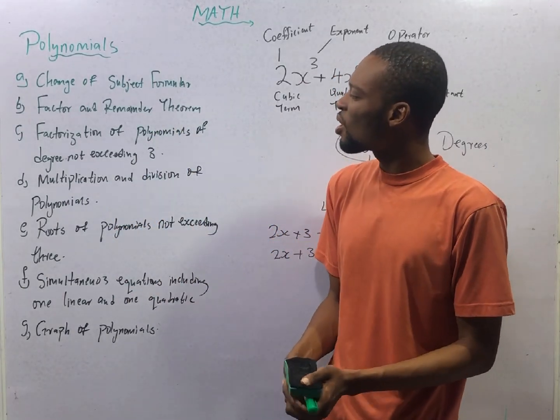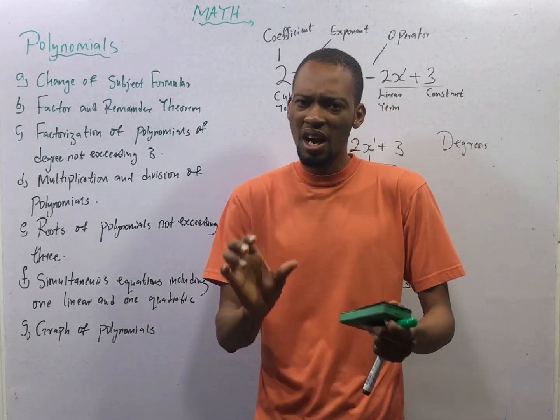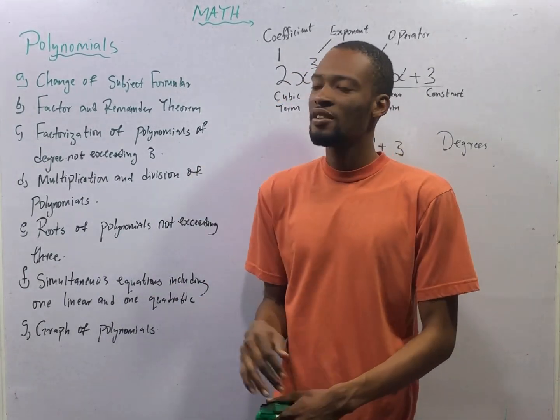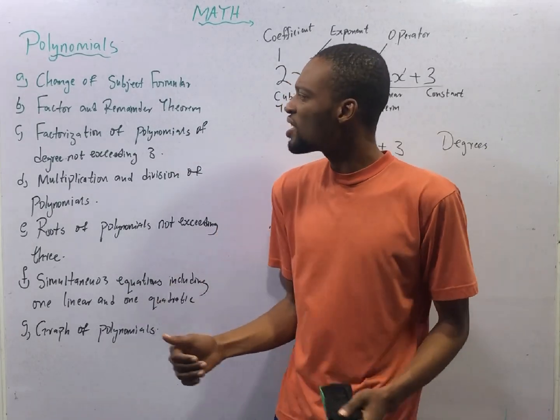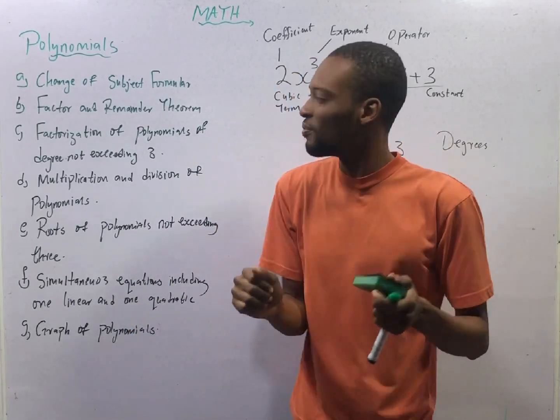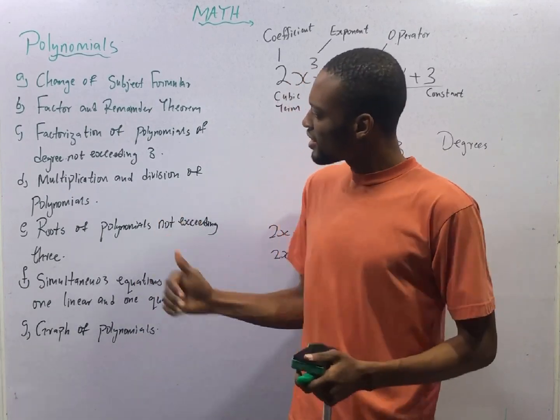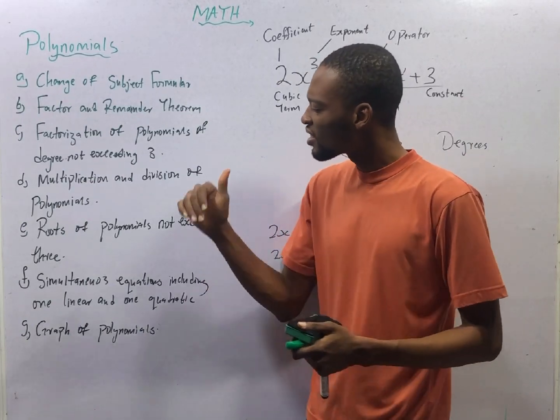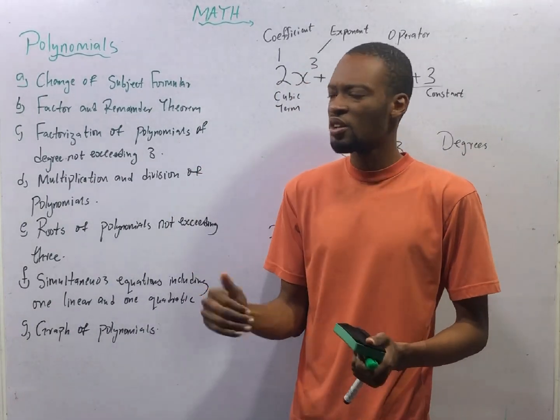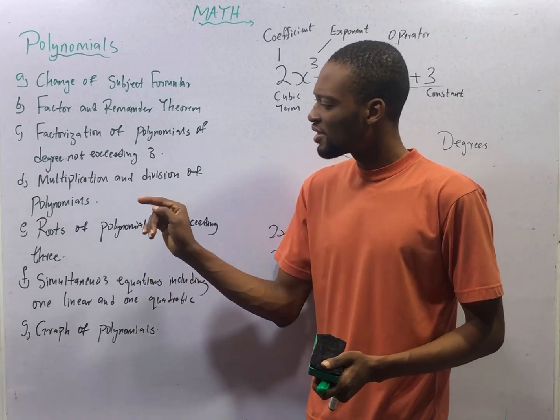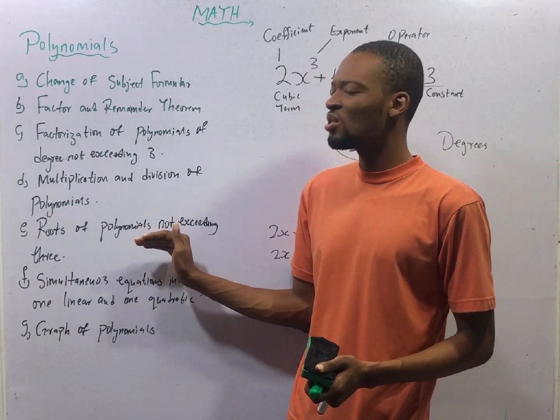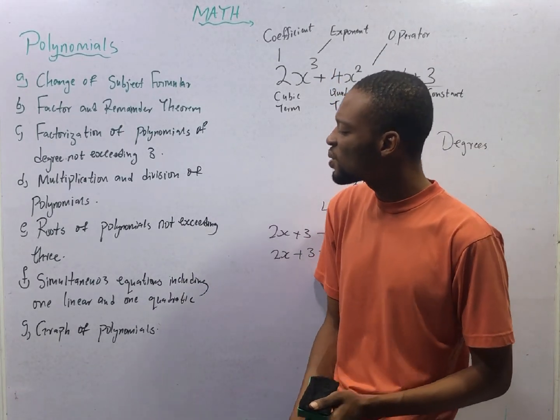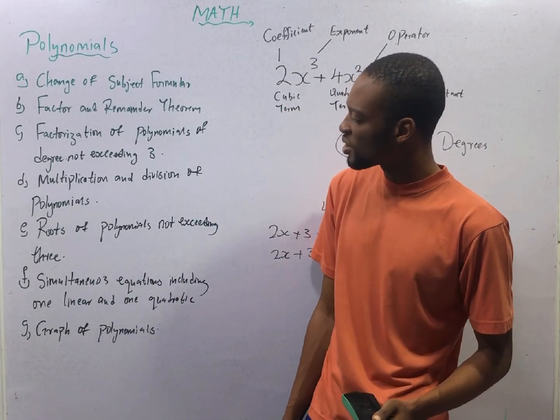The things you need to know under polynomials so long JAMB is concerned are: A, change of subject formula. B, factor and remainder theorem. C, factorization of polynomials of degrees not exceeding 3. D, multiplication and division of polynomials. E, roots of polynomials not exceeding 3. F, simultaneous equations including one linear and one quadratic equation.